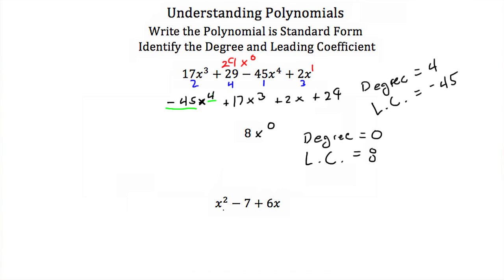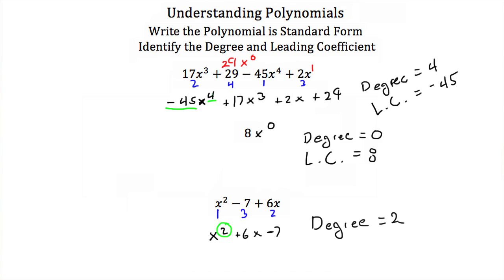Let's look at our third example: x squared minus 7 plus 6x. The x squared has the highest exponent, so it's our first term. The 6x is our second highest, so that's our second term. And the negative 7 will be our third term. Written in standard form: x squared plus 6x minus 7. Our degree is our highest exponent, so that's 2 — our degree is equal to 2. Our leading coefficient is what the x squared term is multiplied by. There's nothing written out front, but you can think of it as 1 times x squared. So our leading coefficient is equal to 1.